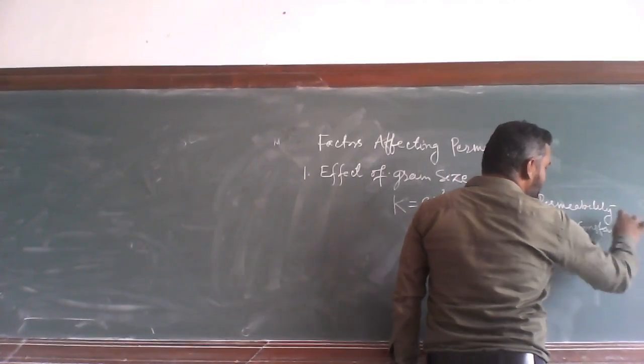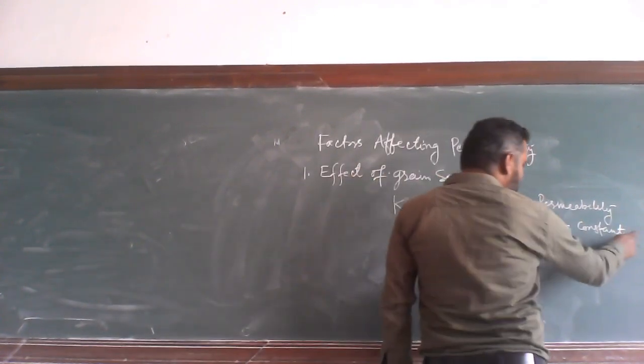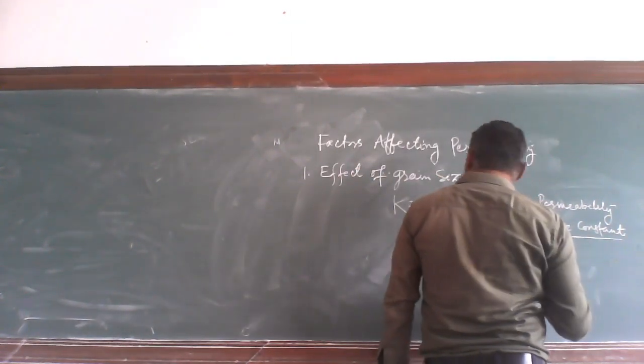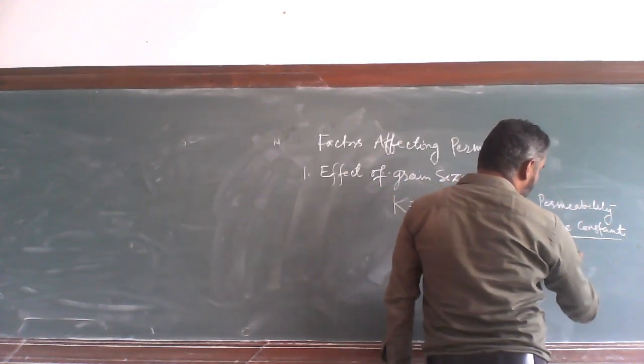It varies based on the soil sample. For clean sand, it has some specific value. For others, it has some specific value. And N is Effect of Grain Size.